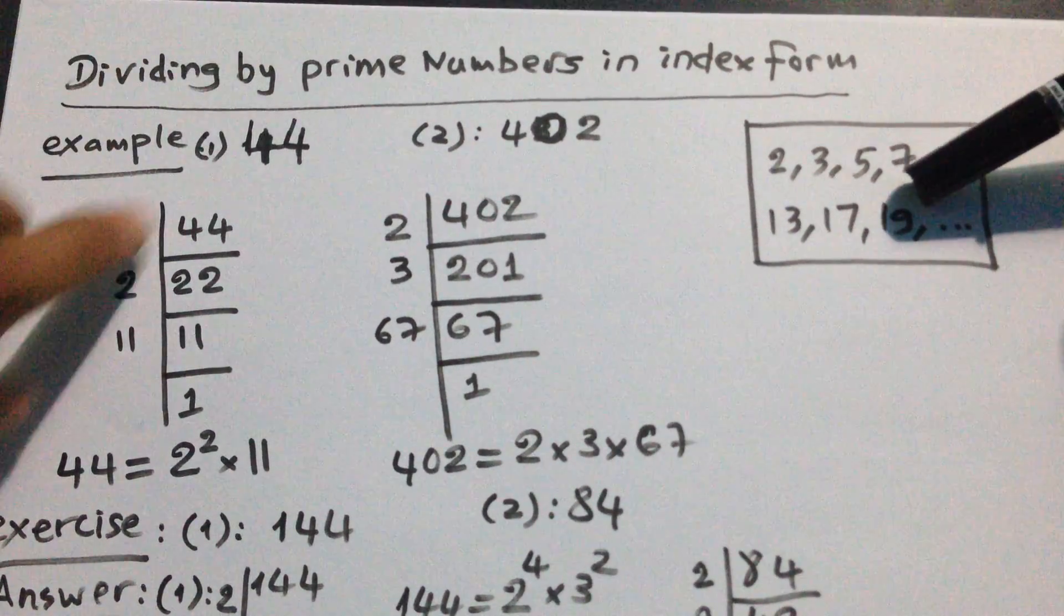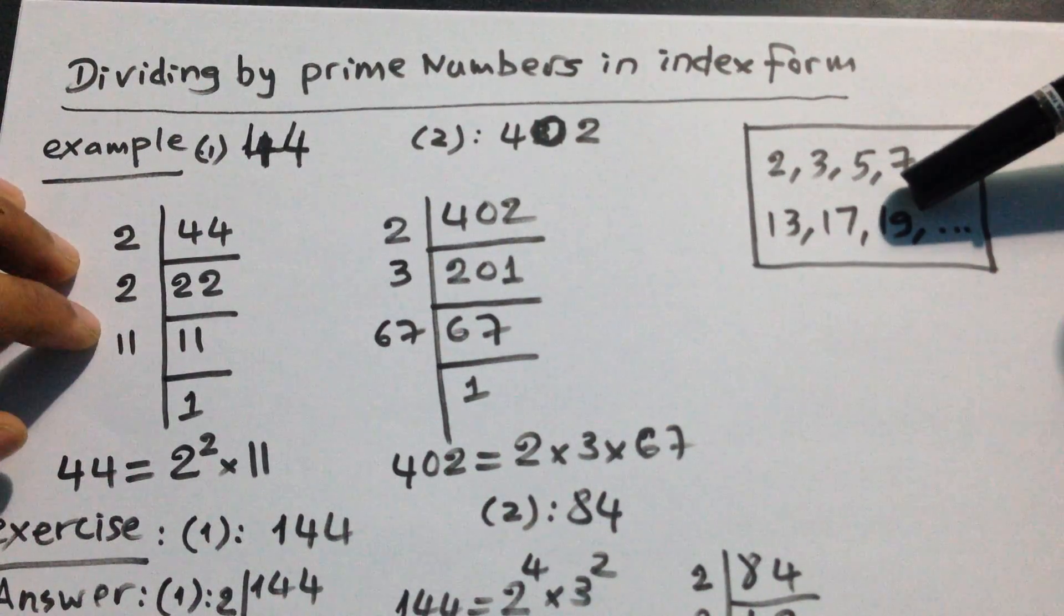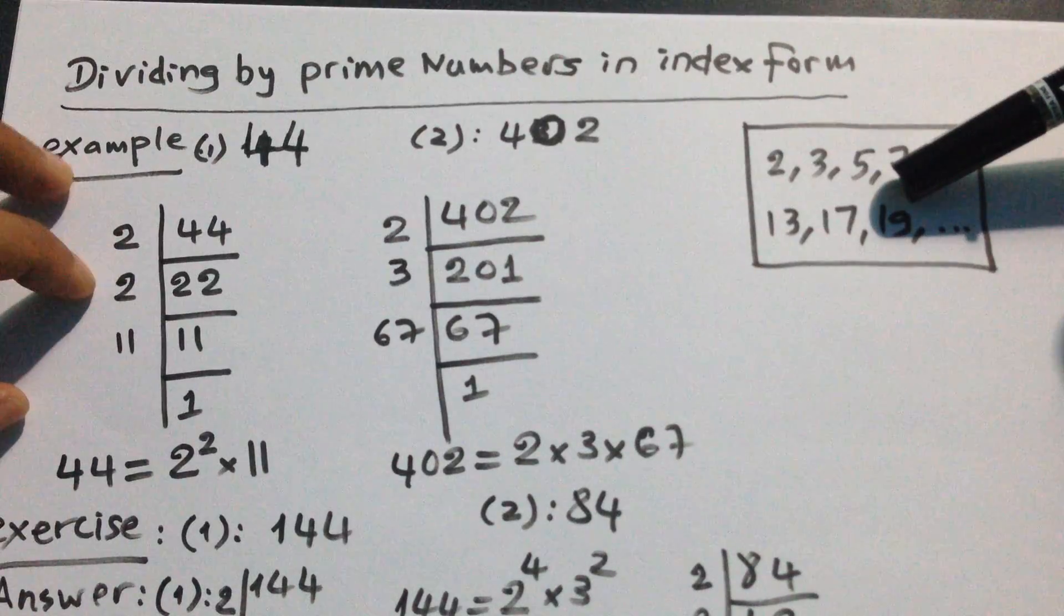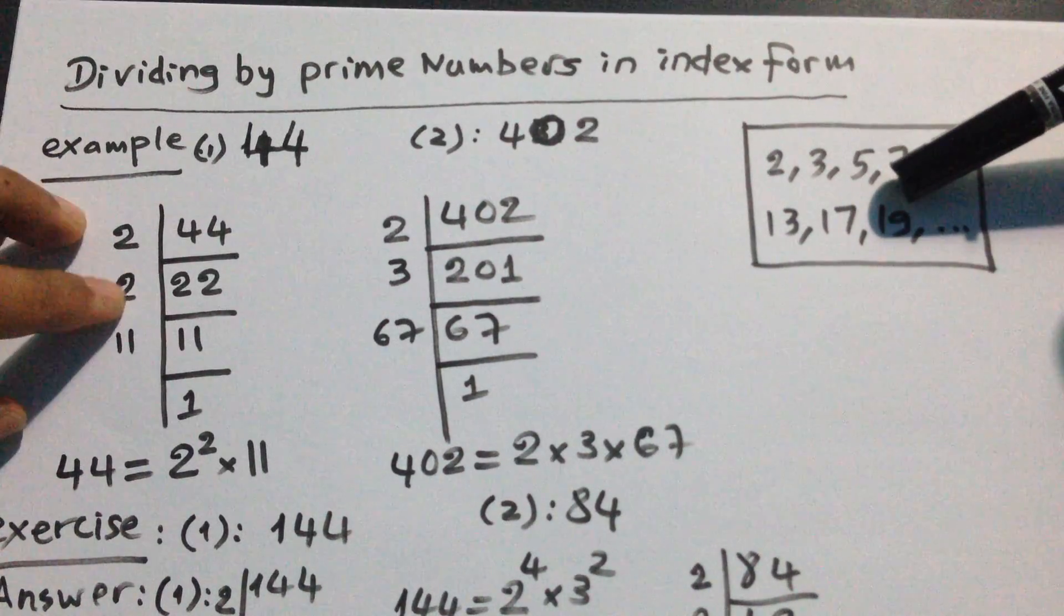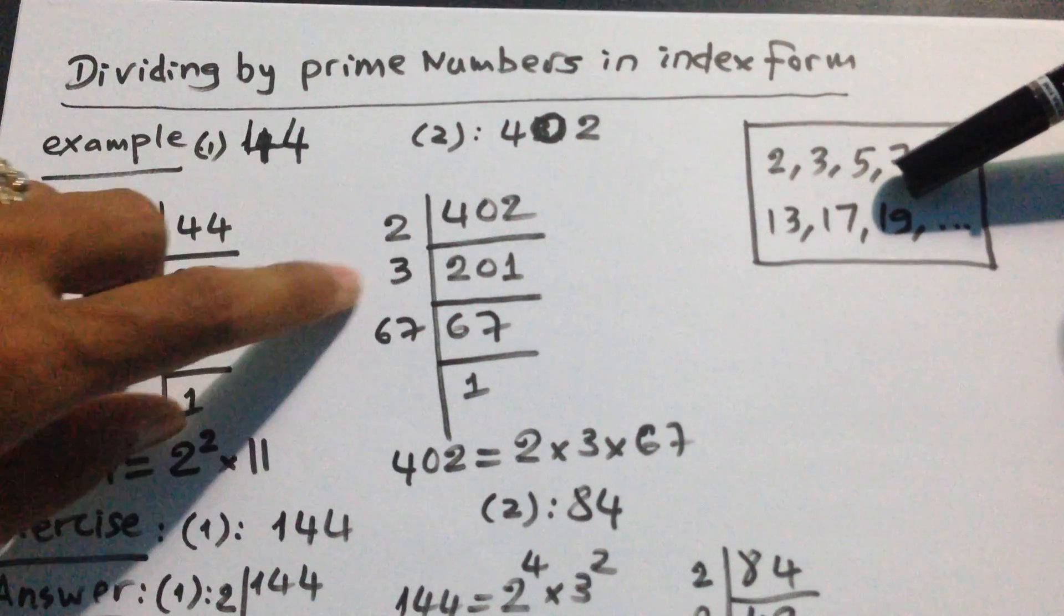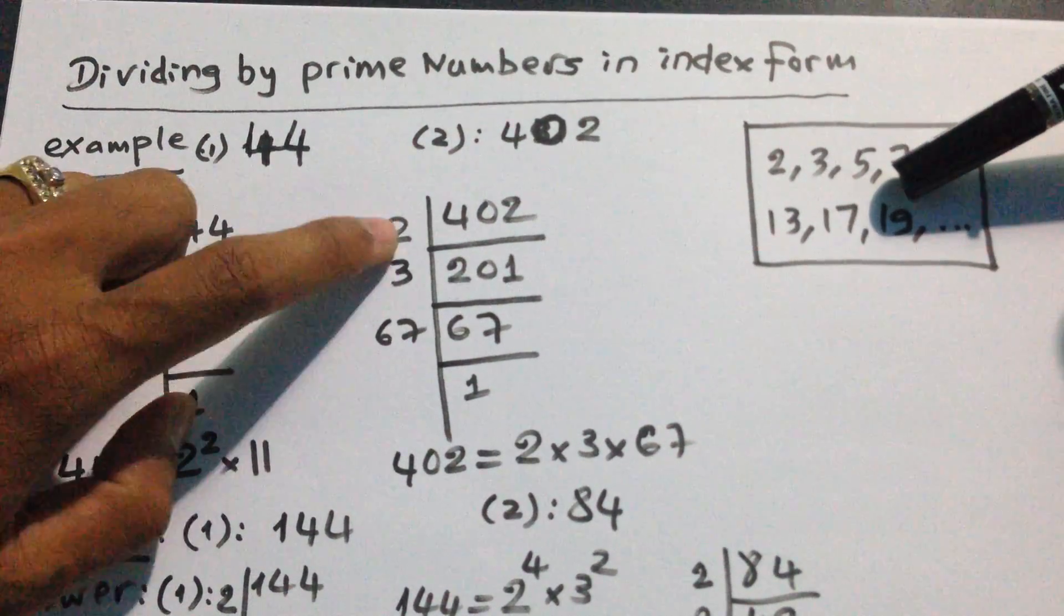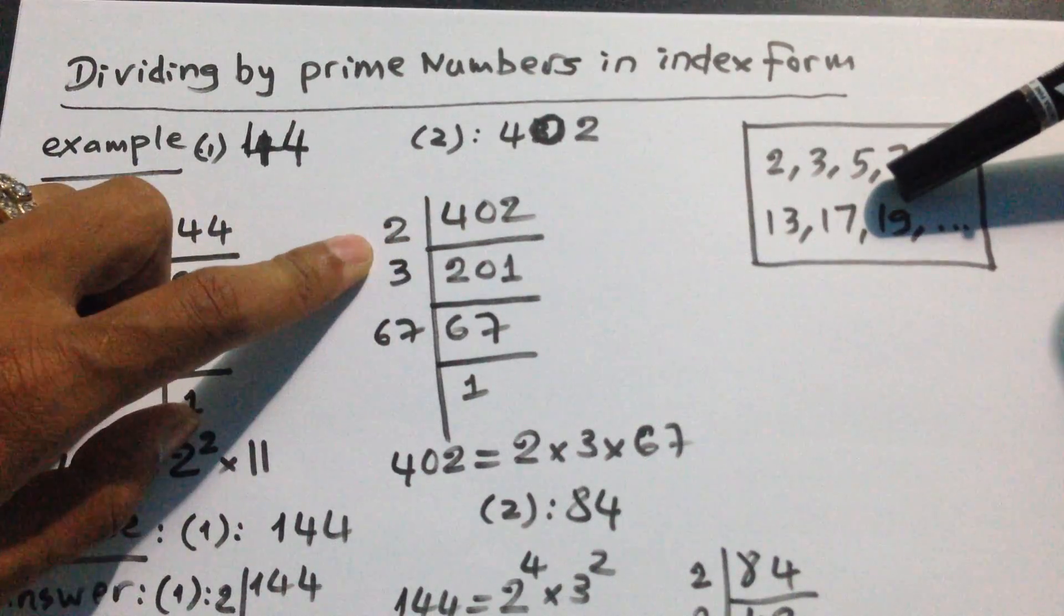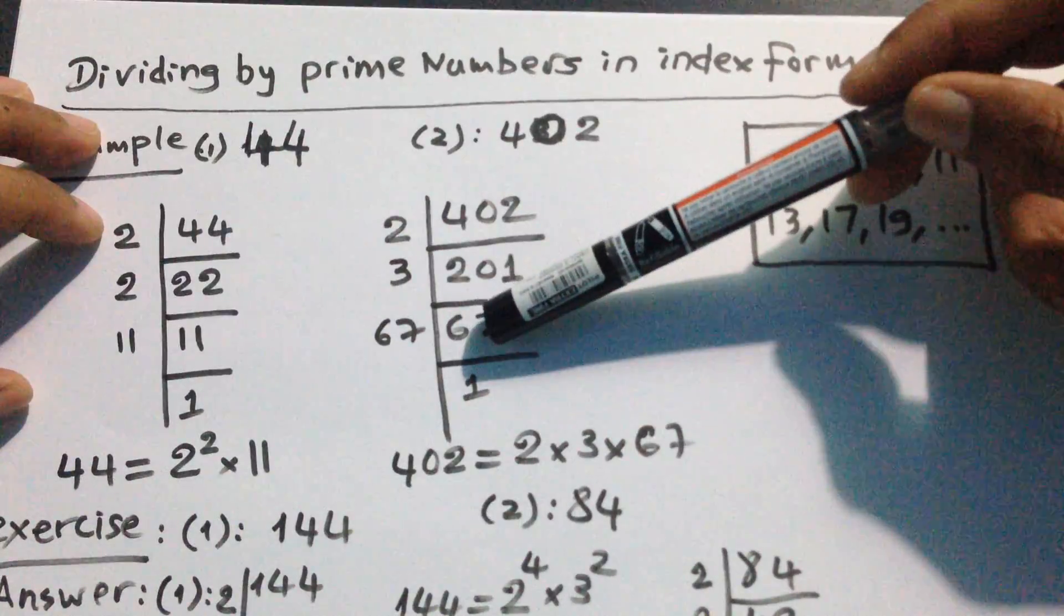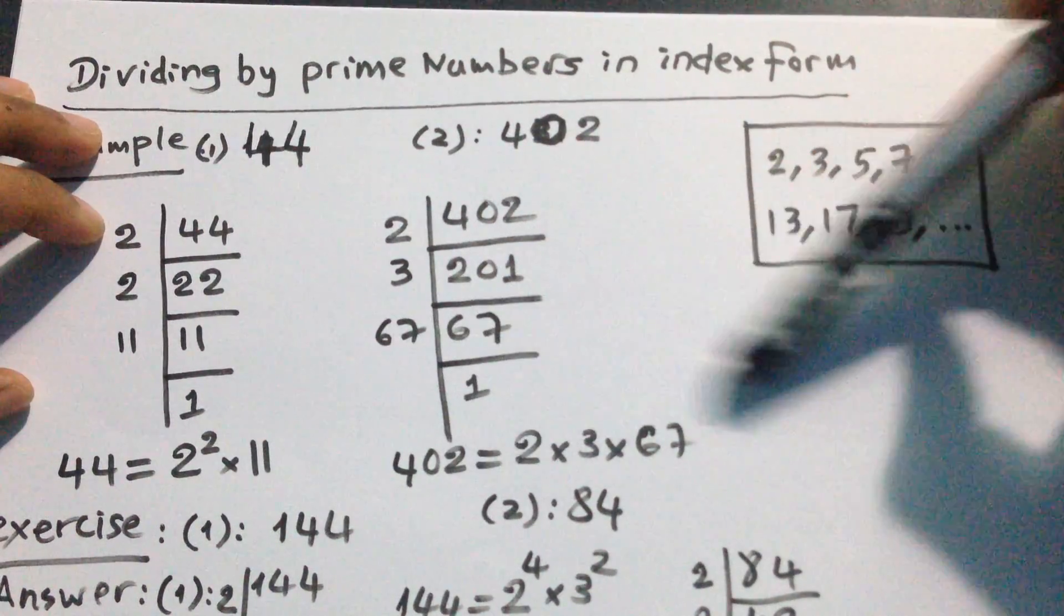The factor in prime number in index form means that 44, we can divide by 2, 22, we divide by 2, 11. How about 402? We get 2 because it's even number, and then it's 201, equal 3, 67. 67 is 1.